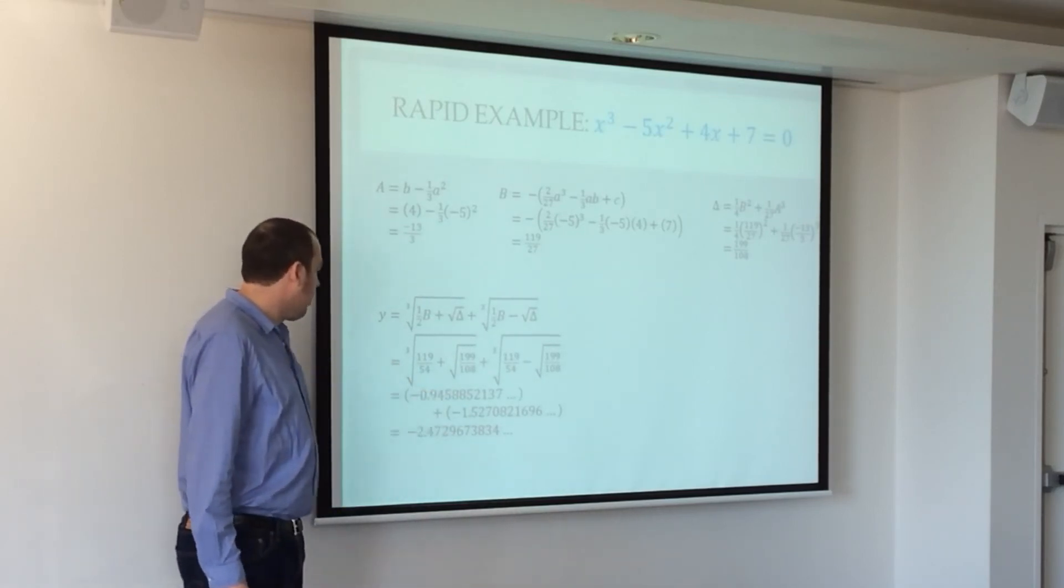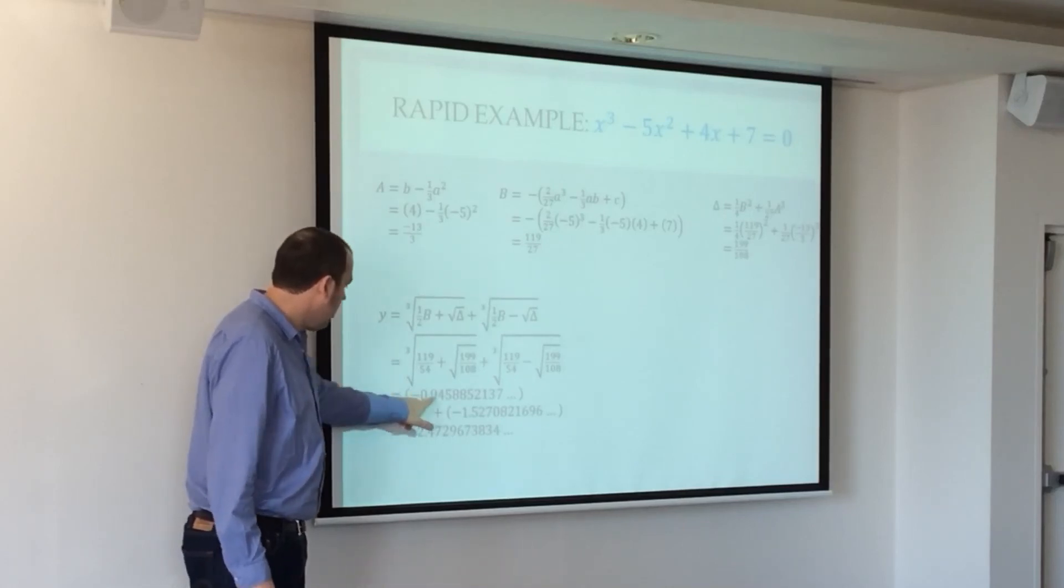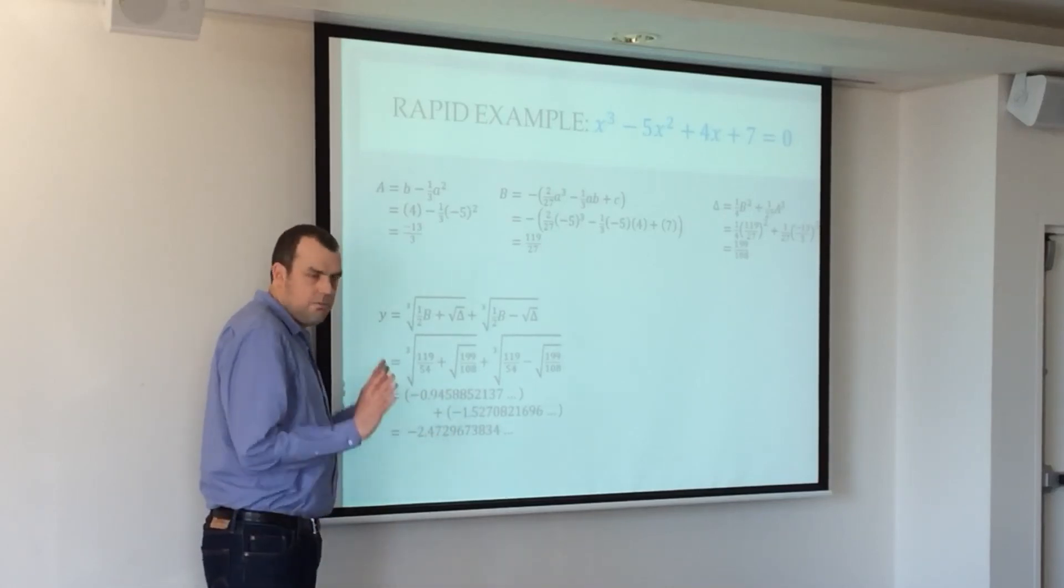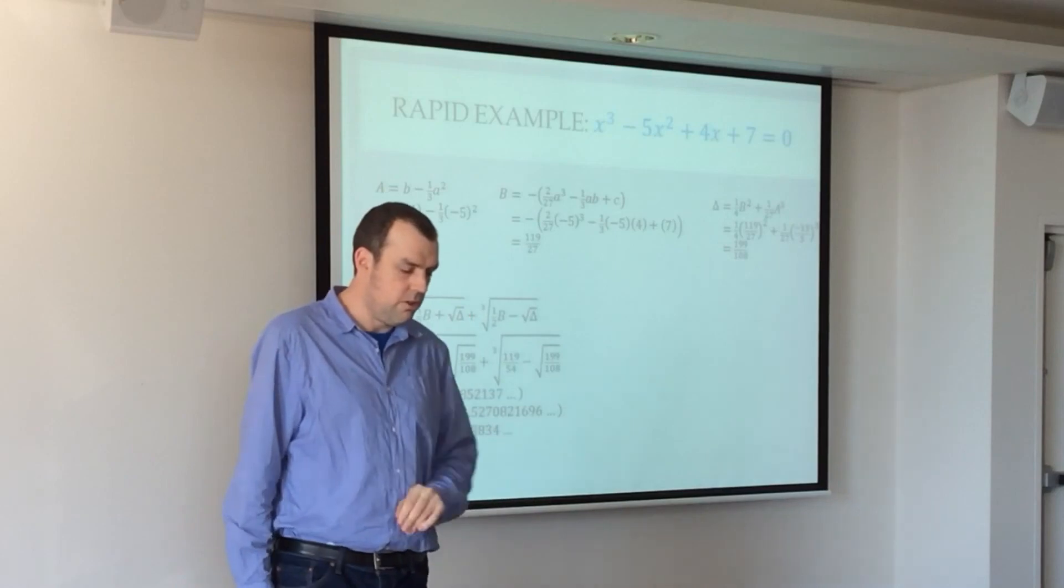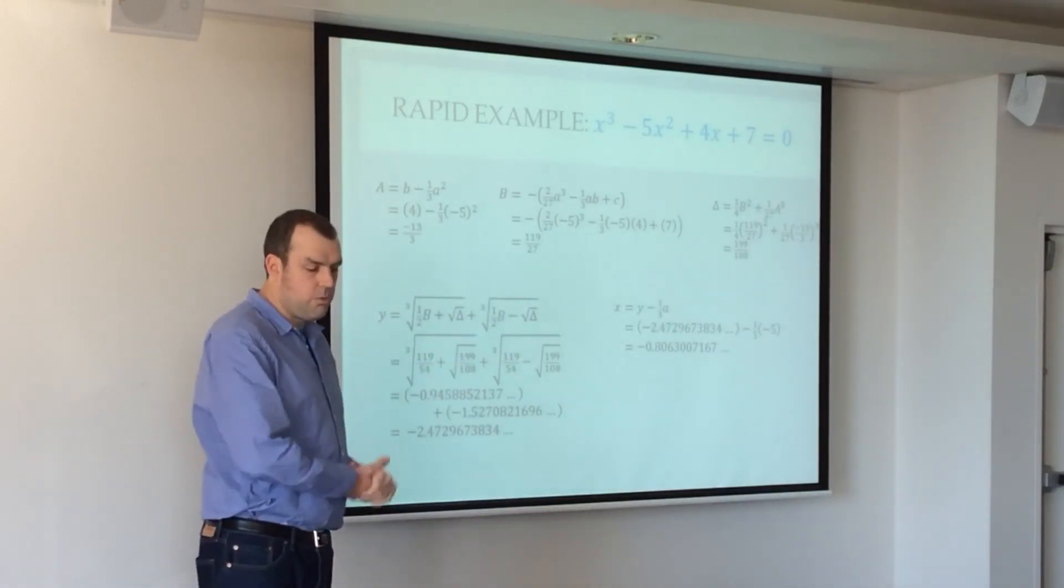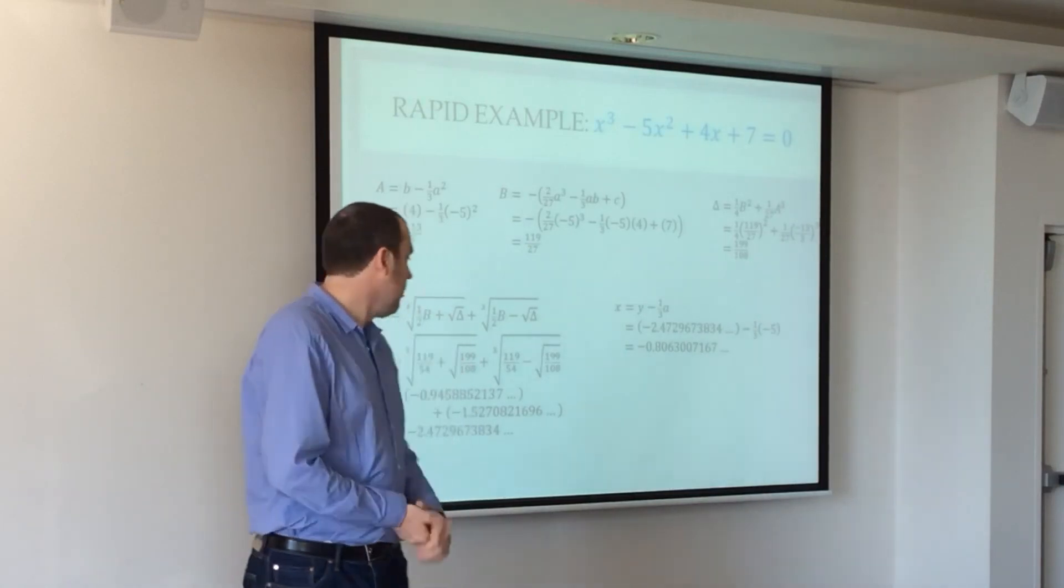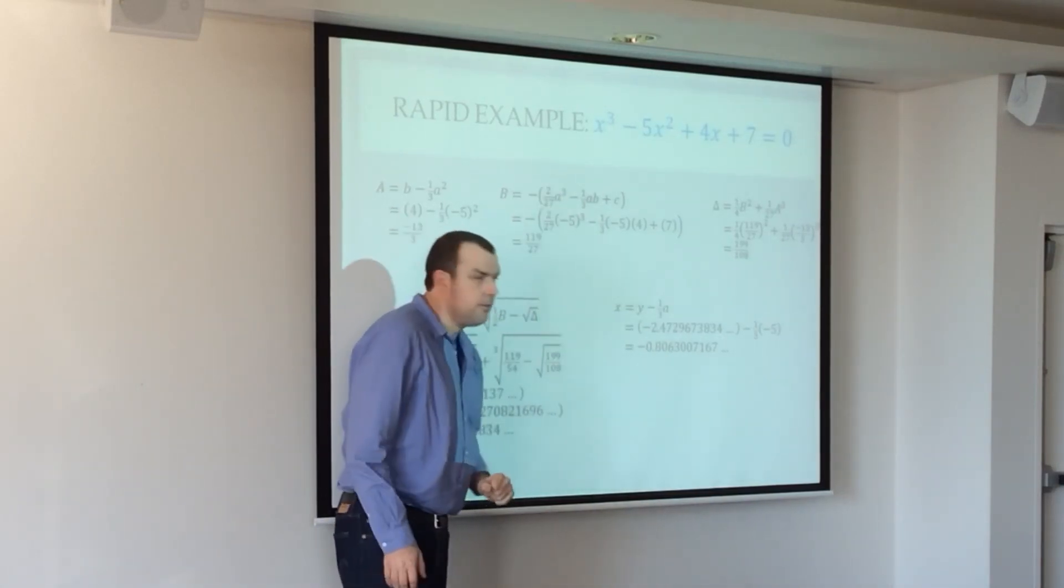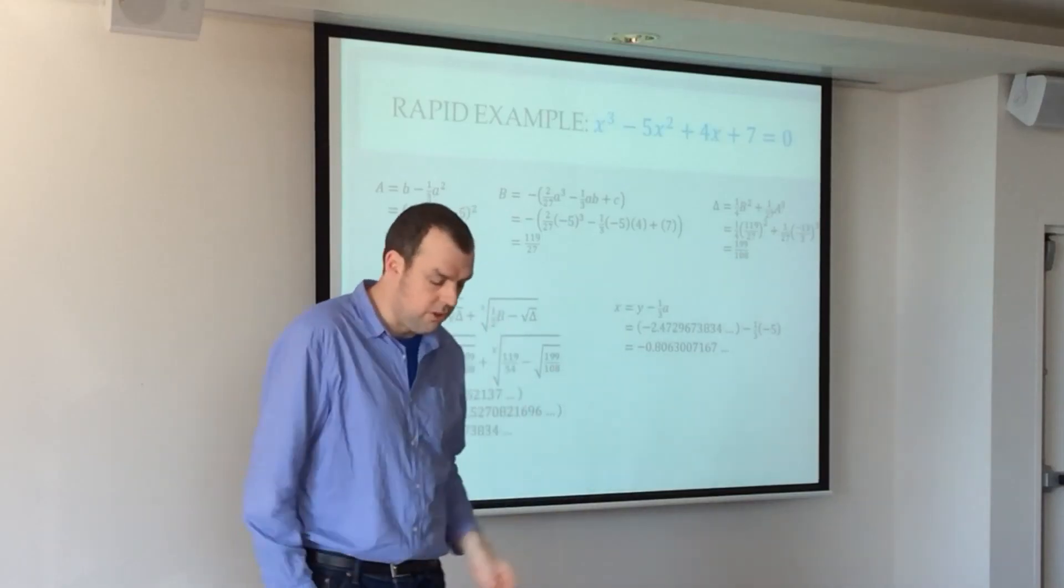All right, and so obviously you've got calculator work there, it's required there, but they add up to our solution. So not a nice solution. That's a randomly chosen equation. And then the x equals y minus the third a, so we get, that is our solution to that. All right, and I don't know what the other two solutions are.